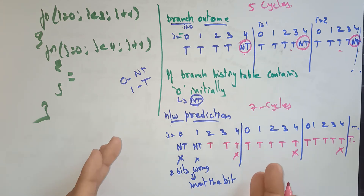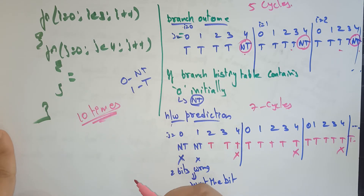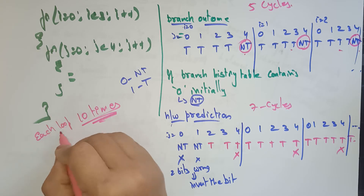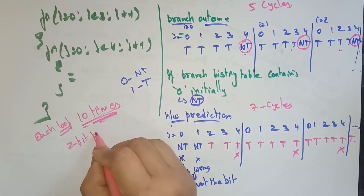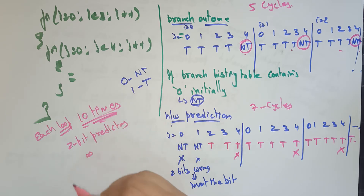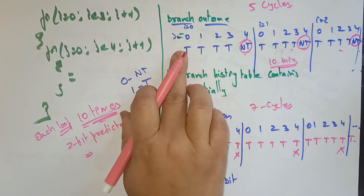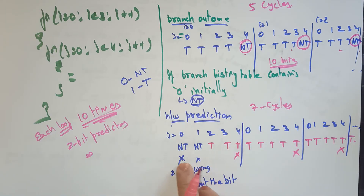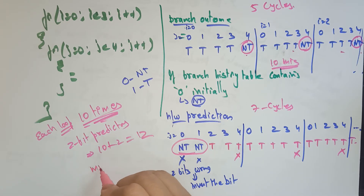Suppose if you run this loop for 10 times — as in the previous example with nested loop structure, each loop repeating 10 times — in the 2-bit predictor, how many mispredictions are there? Actually with 10 cycles there are 10 mispredictions per branch outcome. Plus the starting 2 non-taken predictions. Total: 12 mispredictions.